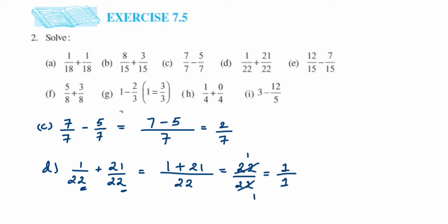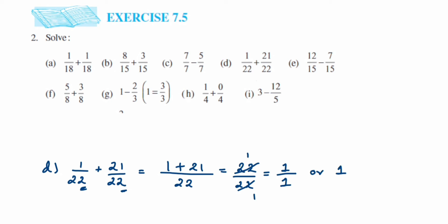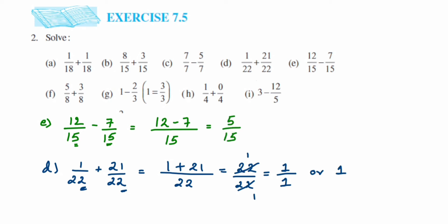Next we have problem e. We have 12 by 15 minus 7 by 15. The denominators are the same, which is 15. Write the denominator 15 and subtract the numerators: 12 minus 7 is 5. We get 5 upon 15. Reducing to simplest form — 5 ones and 5 threes are 15 — so the answer is 1 upon 3.